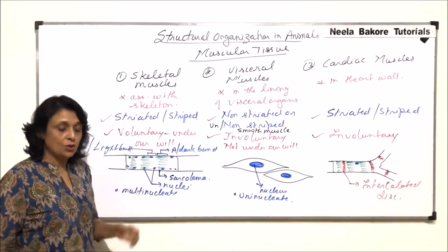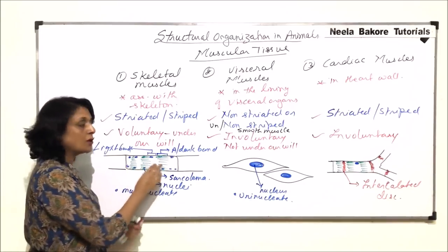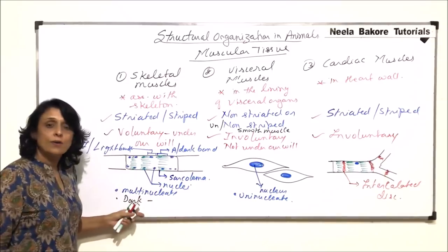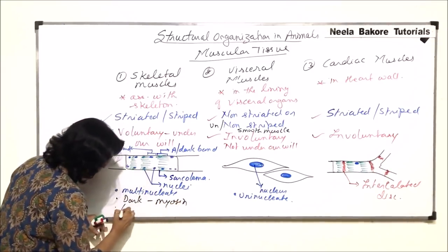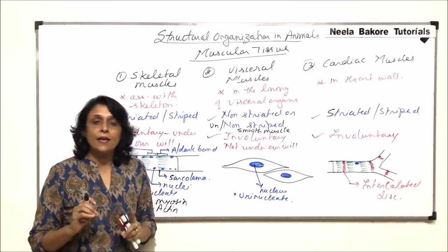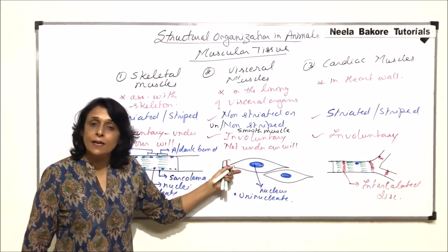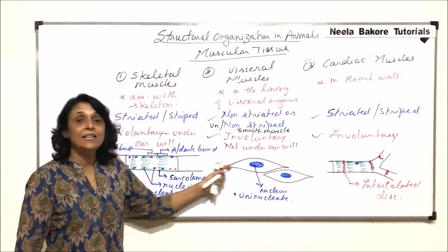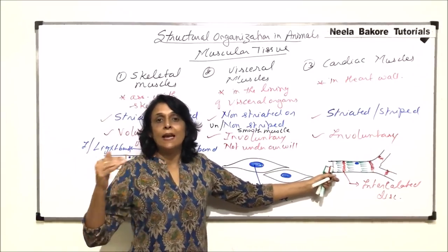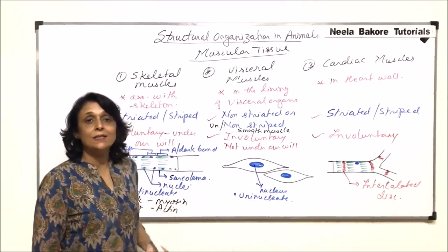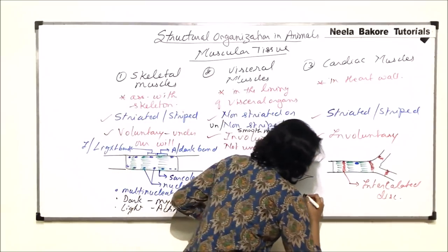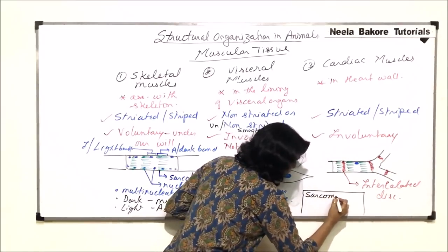Regarding striations: skeletal muscles have a peculiar arrangement of light and dark bands. The dark band contains a contractile protein called myosin, and the light band contains the contractile protein called actin. Smooth muscles also have actin and myosin fibers, but their arrangement is not the same as in skeletal muscle, which is why striations are not visible. Cardiac muscle also has an arrangement of actin and myosin. The contractile unit of a muscle is known as a sarcomere.